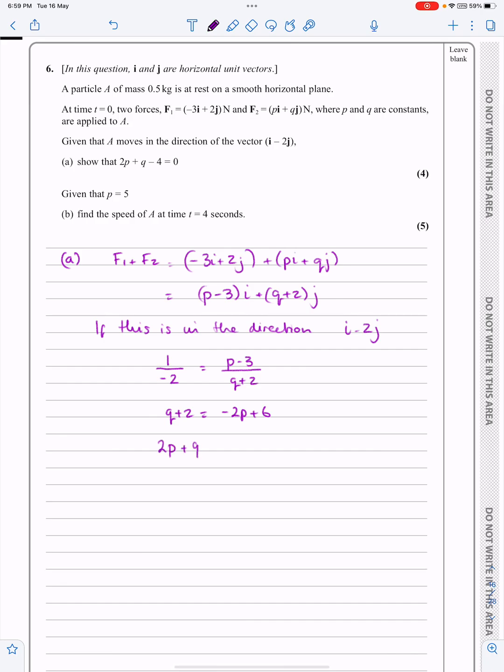2P plus Q plus 2 is equal to 6. So in other words, 2P plus Q minus 4 is equal to 0. I really don't think I need that second line, but anyway.